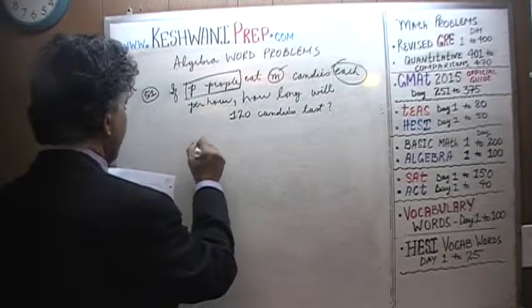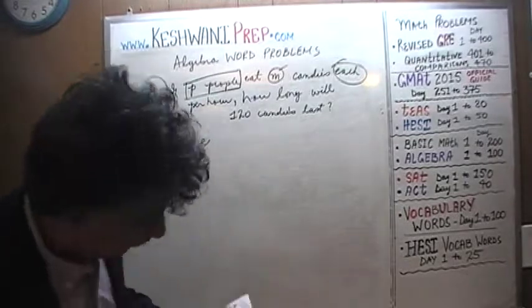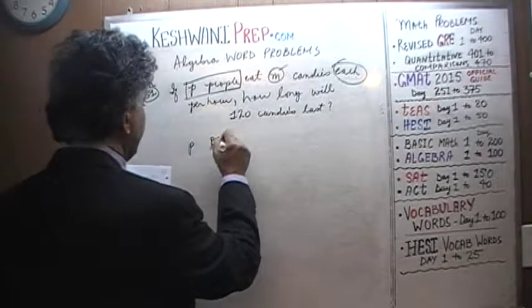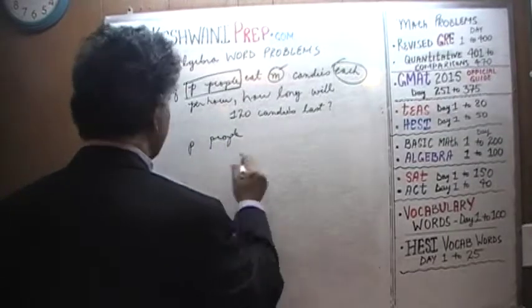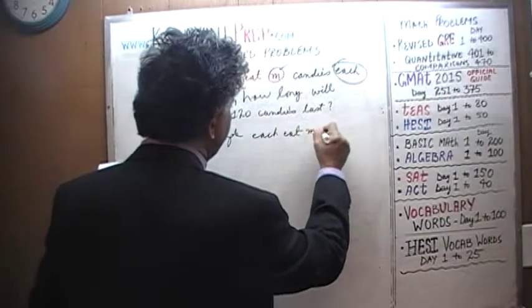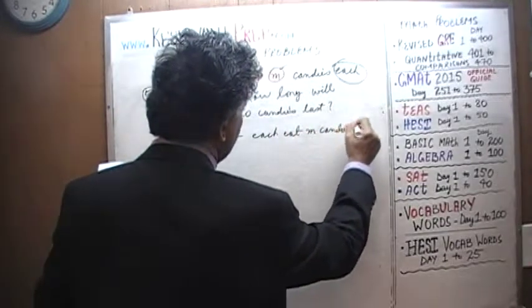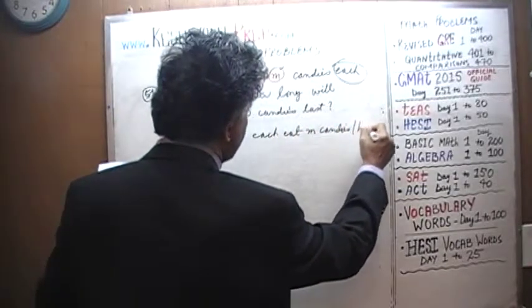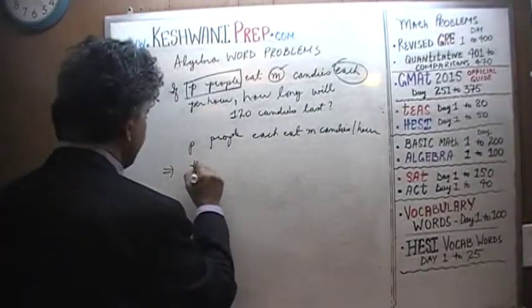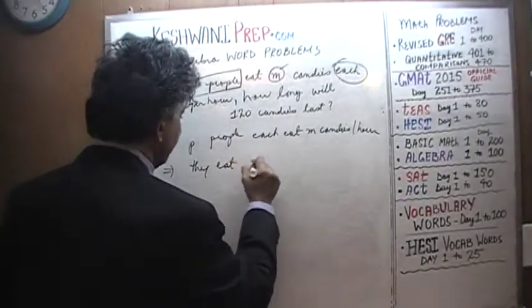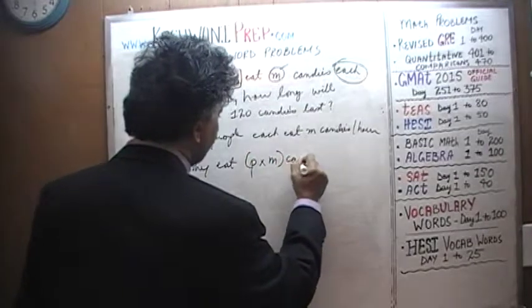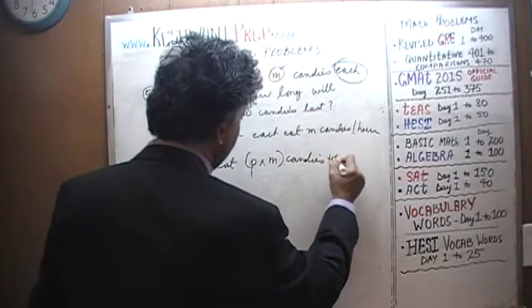P people each eat M candies per hour. That tells us — that implies that they are eating P times M candies per hour.